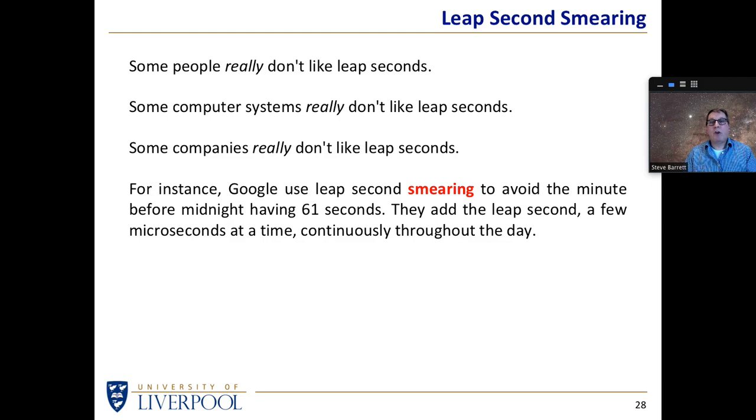For instance Google decided not to introduce a leap second when everybody else would do so. They decided to smear the leap second to avoid having 61 seconds in the minute. They add the leap second drip feed, a few microseconds at a time throughout the day. But other companies don't which means Google's clocks are not synchronized with other people's clocks even though in principle the clocks are accurate to nanoseconds.